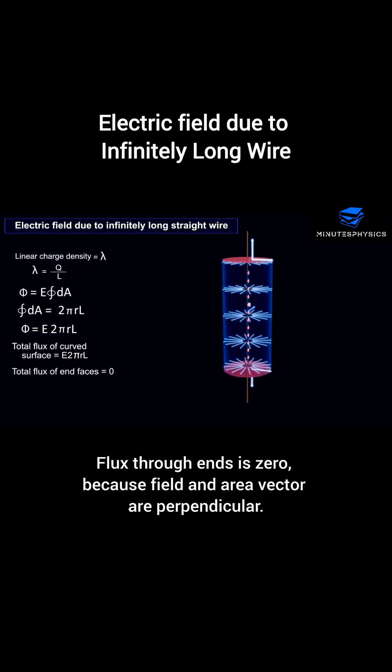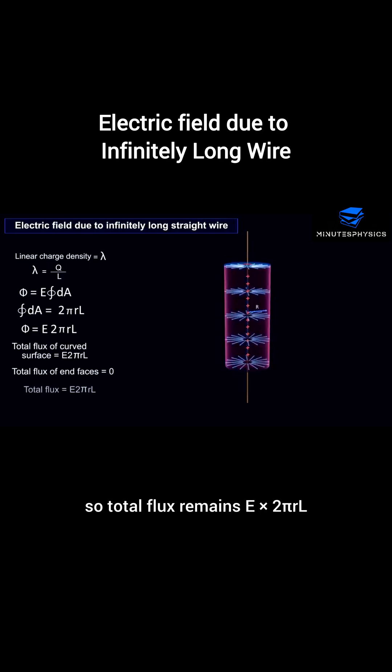Flux through ends is zero because field and area vector are perpendicular, so total flux remains E times 2 pi r l.